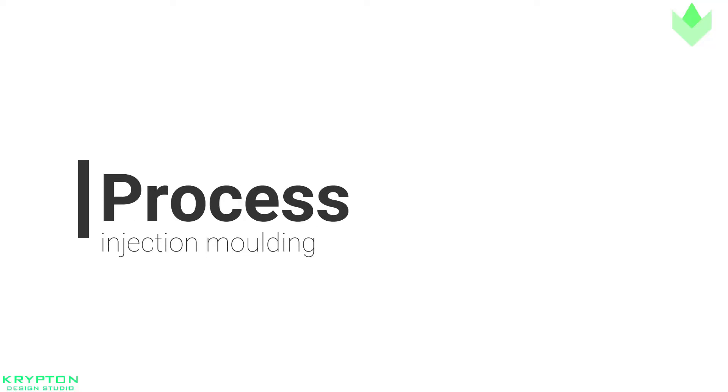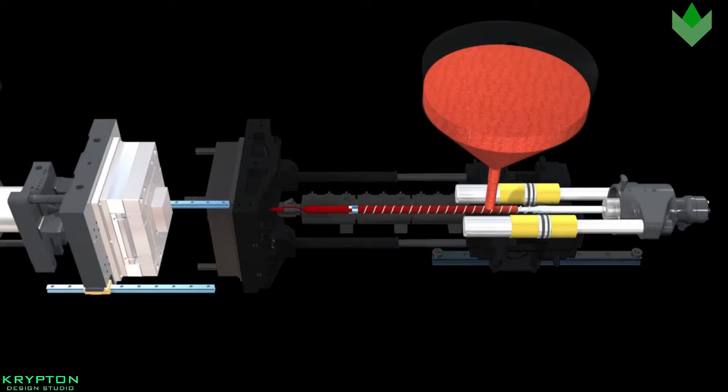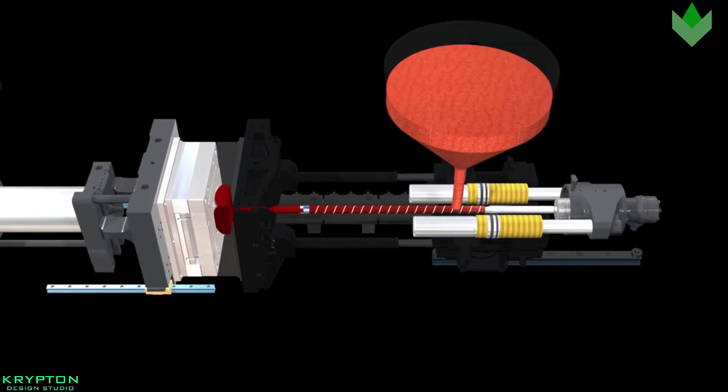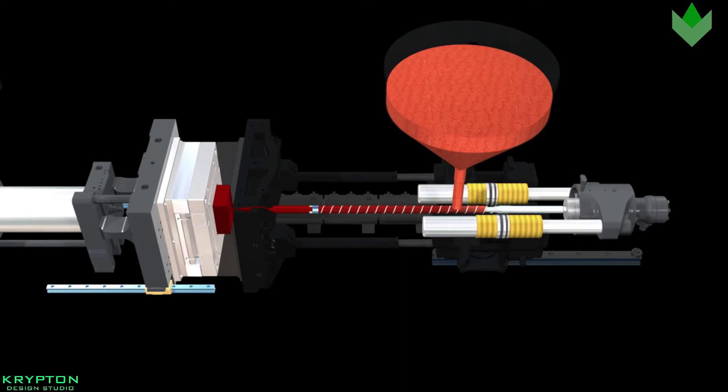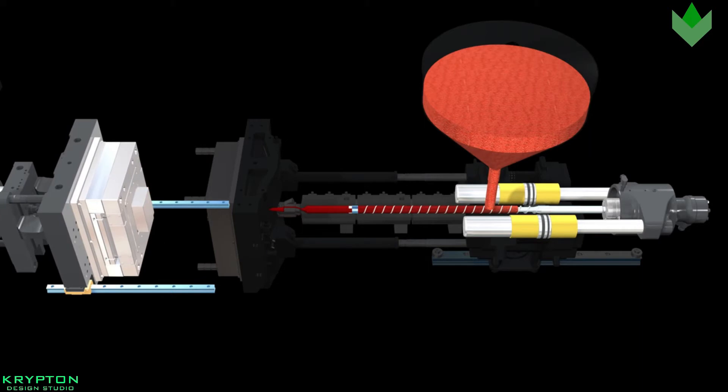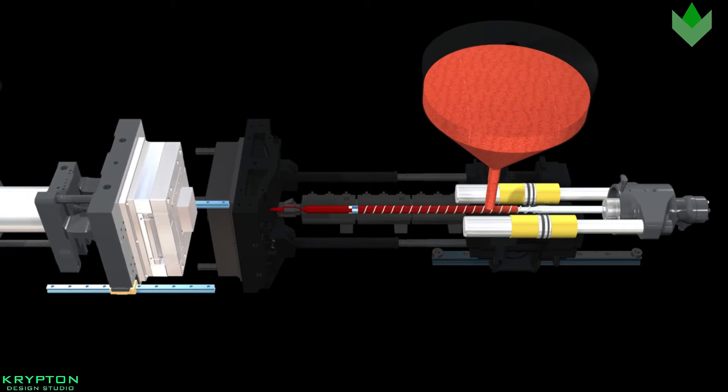Injection molding process. With injection molding, granular plastic is fed by a hopper into a heated barrel. As the granules are slowly pushed forward by a screw-type plunger, the plastic is forced into a heated chamber called a barrel where it is melted.